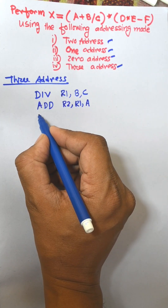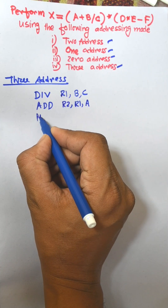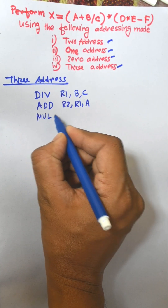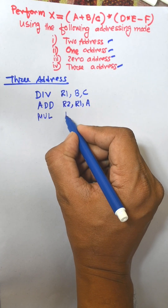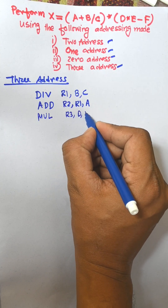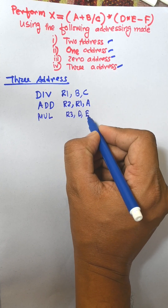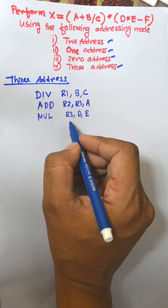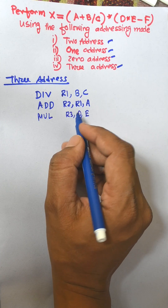Now the next one is multiply: D and E are multiplied together and the result is stored into R3.